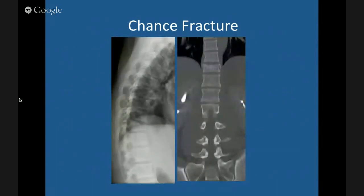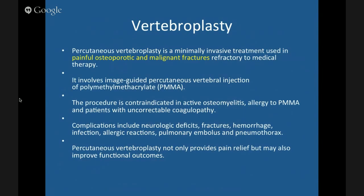A Chance fracture is a seat belt fracture — less common now because of shoulder straps. From sudden deceleration in a motor vehicle accident, you split the body and cleave through the facet joints. It typically occurs at the thoracolumbar junction. It's actually relatively stable.